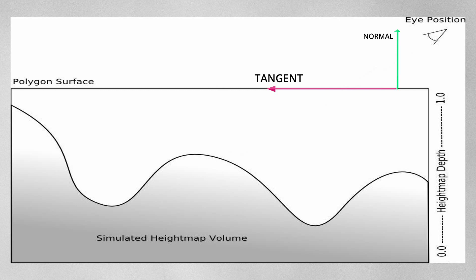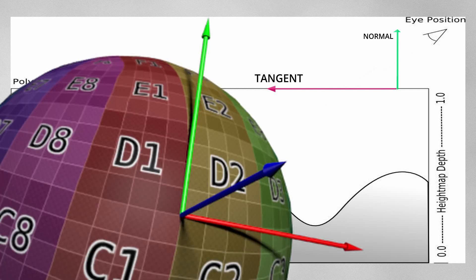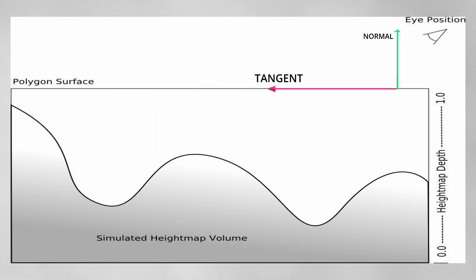So this space is called tangent space. Basically each point on our mesh has a different tangent space which is defined by its normal map on that point. If we do all this calculation in tangent space it would be much easier.